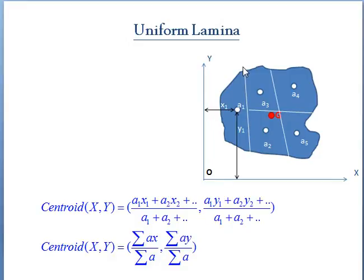So to obtain the centroid of the lamina, you can divide this lamina into number of areas, and each area is having its centroid at x1, y1 and x2, y2, and so on. So the centroid of the whole lamina can be determined by the formula a1x1 plus a2x2 divided by total area, and similarly y coordinate.